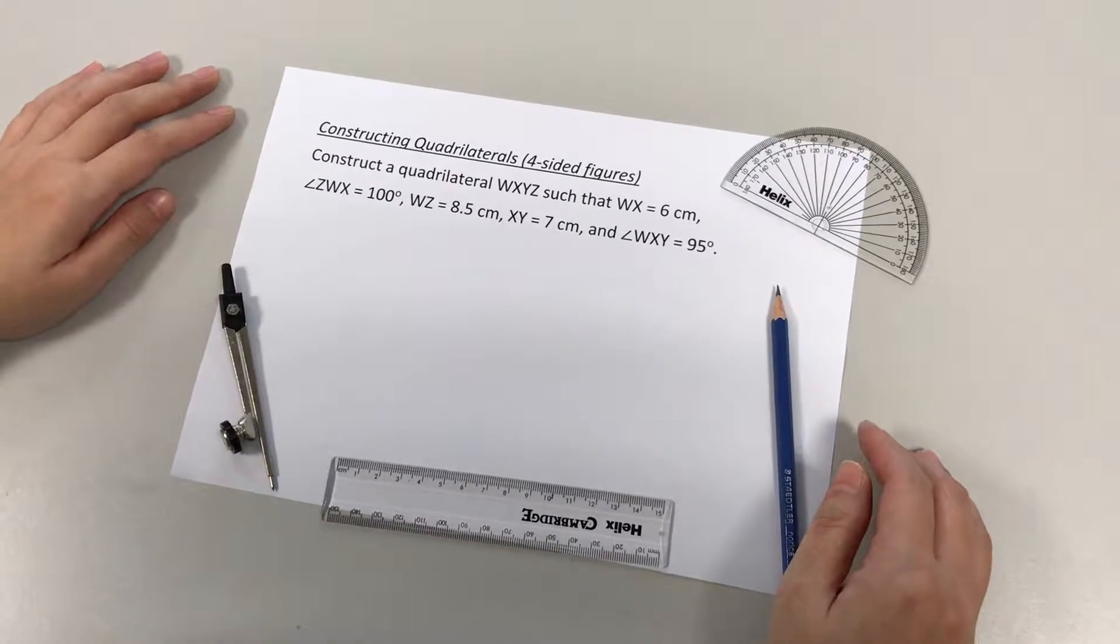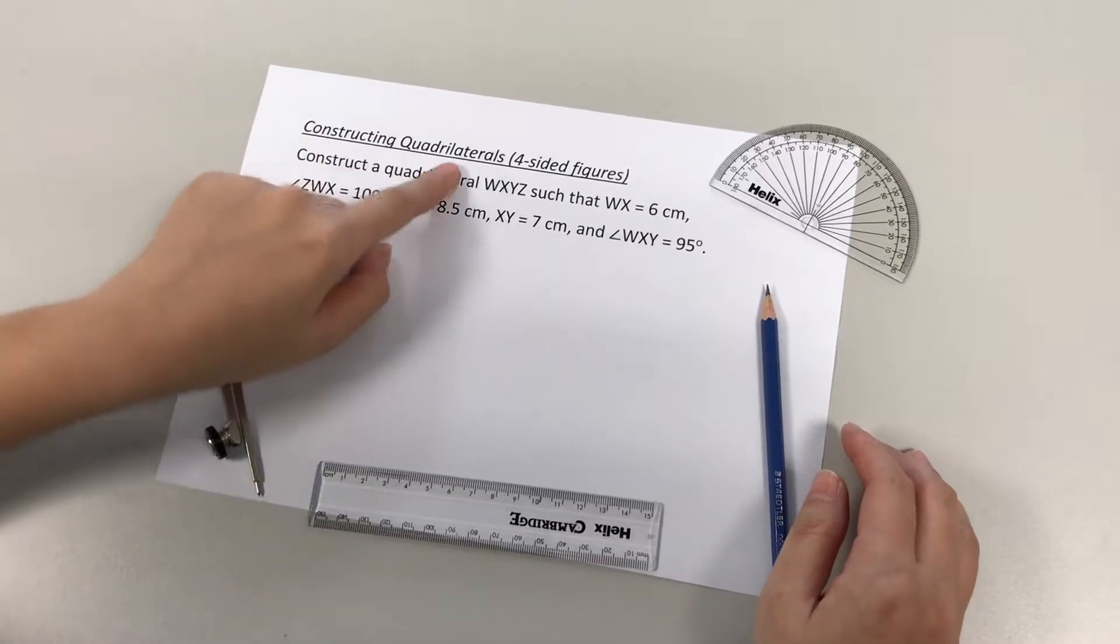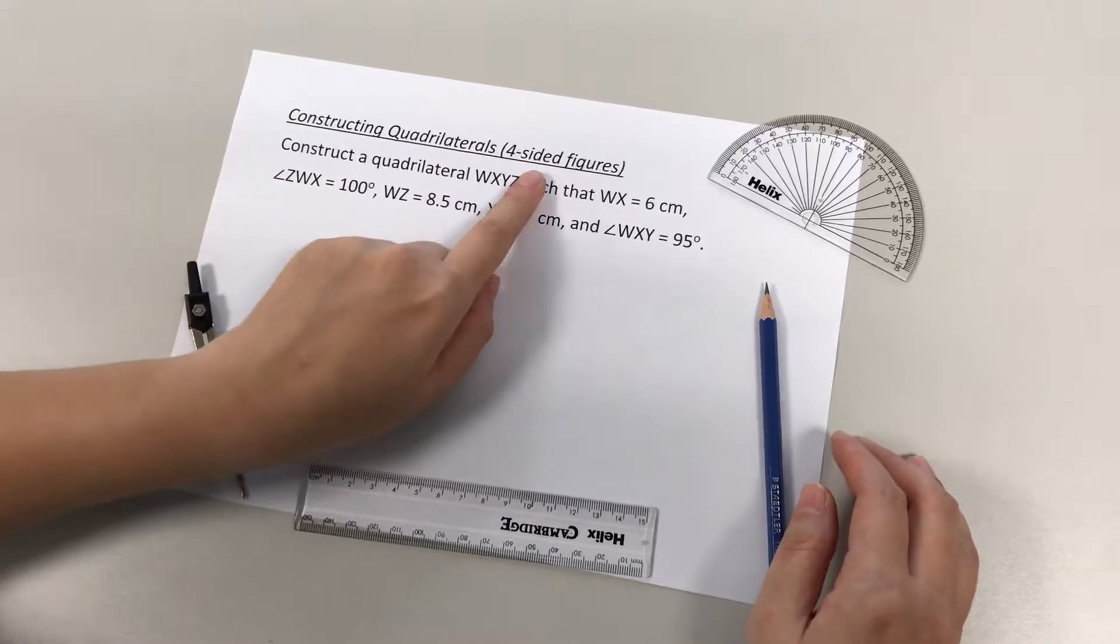Hi, welcome back. Now we are going to look at how we are going to draw a quadrilateral, which is simply a four-sided figure.